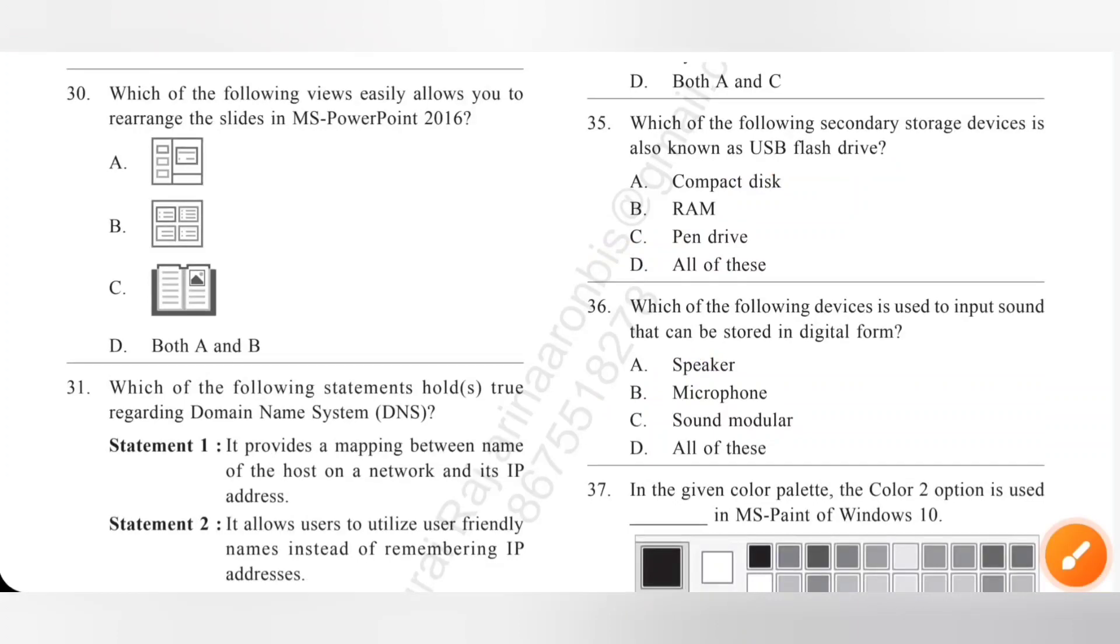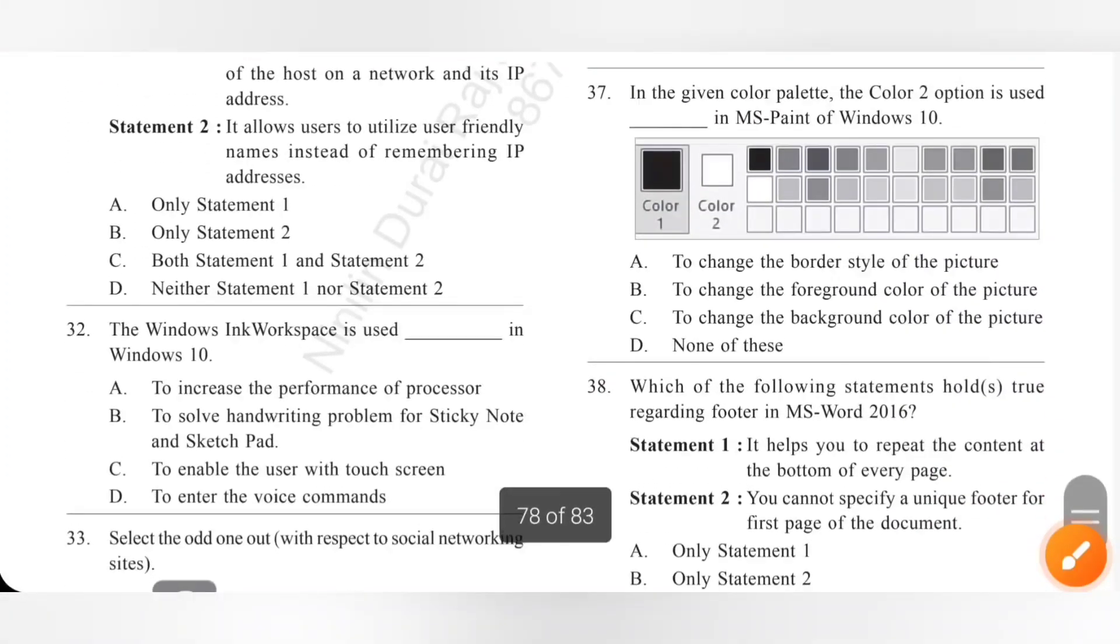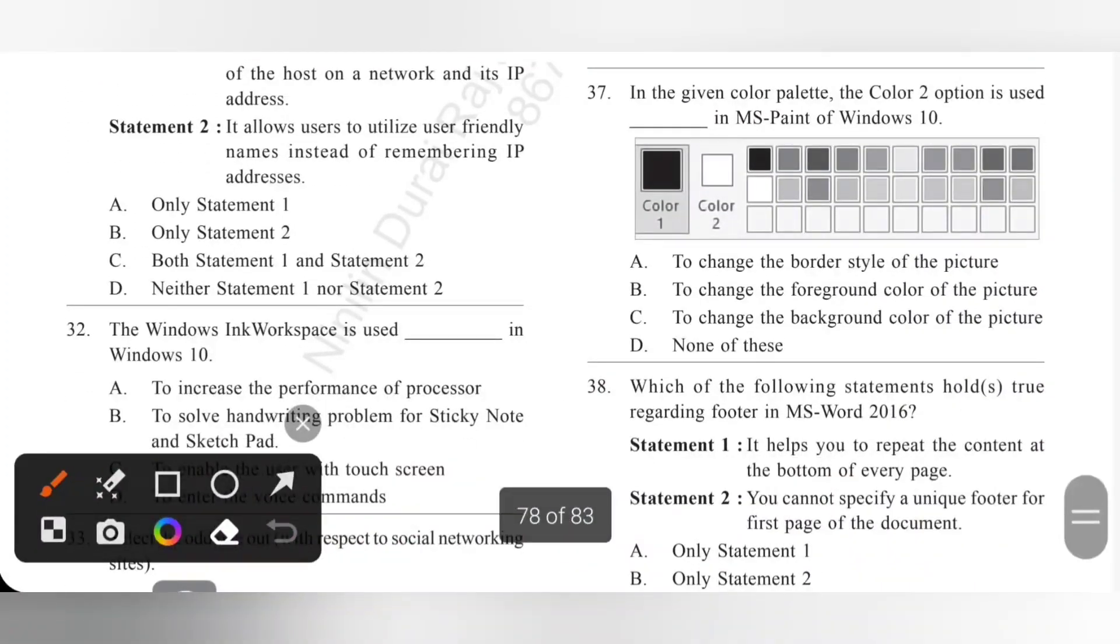Question 37: In the given color palette, the color 2 option is used to dash in MS Paint of Windows 10. Color 2 palette. Actually, color 1 palette is used to change foreground color of the picture. Color 1, it is used to change foreground color of the picture. But, color 2 is used to change background color of the picture. So, option C is the correct answer.